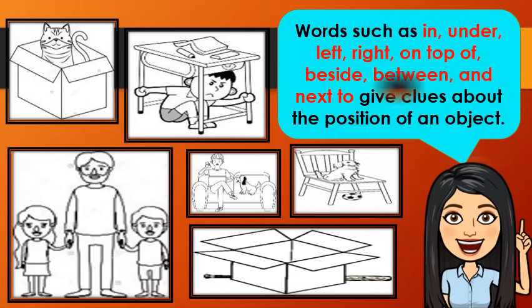Words such as in, under, left, right, on top of, beside, between, and next to give clues about the position of an object. For example, the cat is in the box. The boy is under his table.